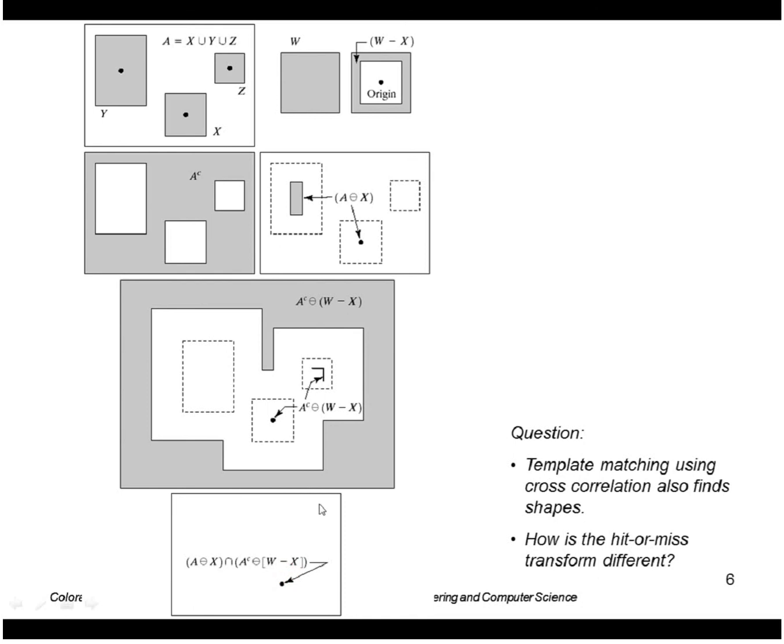So similar to cross-correlation this transformation finds the location of shapes in images. But it needs an exact match. Cross-correlation gives you a value as to how well the shape matches. But here it's a binary value. It either matches perfectly or it doesn't match.